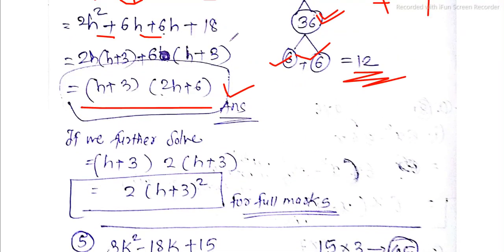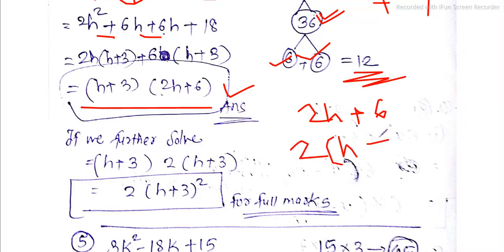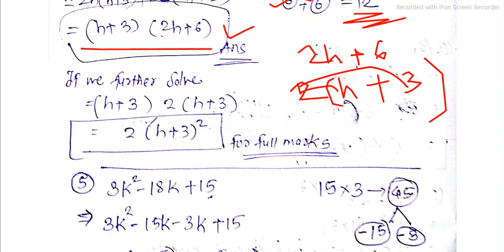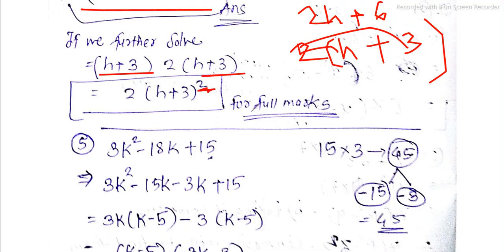The multiplication gives (h + 2)(h + 3) doubled, and it is equal to a perfect square. Full marks.